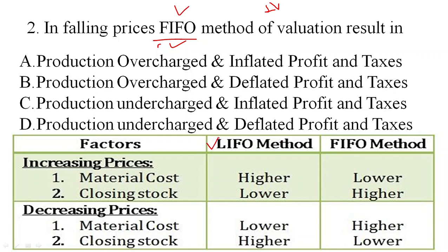Others are LIFO — last in, first out — HIFO — highest in, first out — weighted average method, base stock method, and NIFO. So under FIFO with falling prices, where market prices are decreasing and the FIFO method is opted.